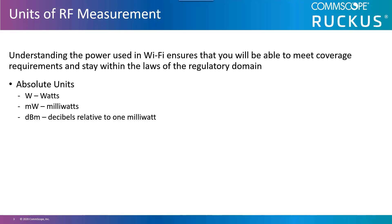The transmitted signal loses strength as it propagates away from the transmitter. You could be transmitting at 100 milliwatts from an antenna, but due to the distance, noise, and the sensitivity of the receiving device, you will never receive at that signal wirelessly.